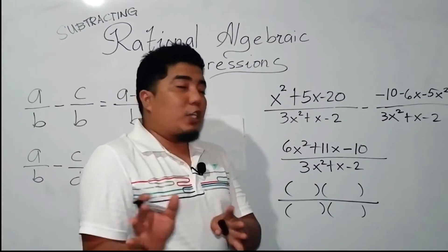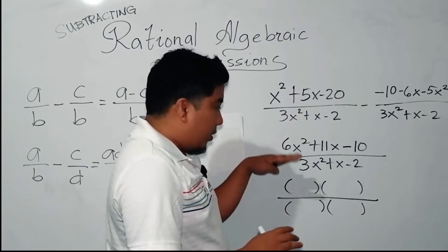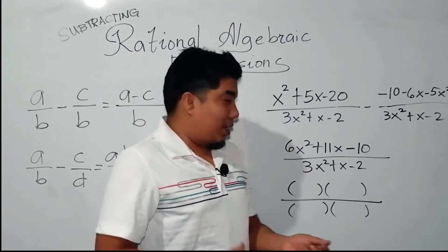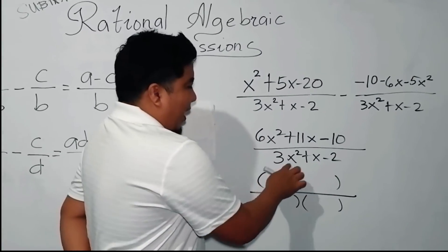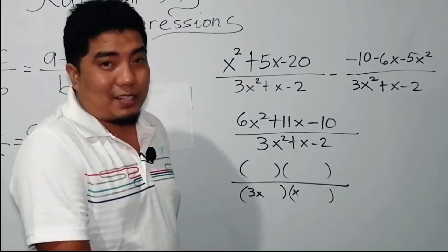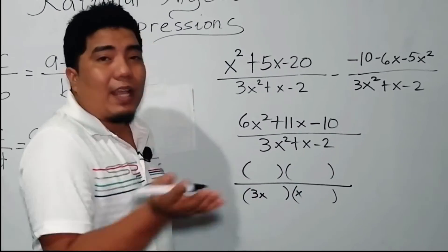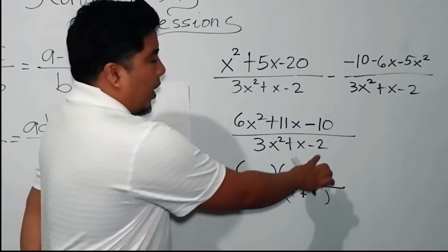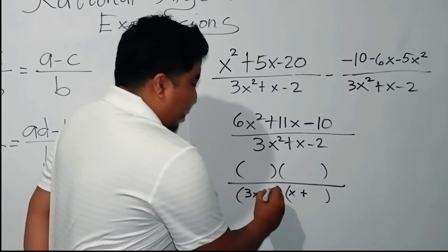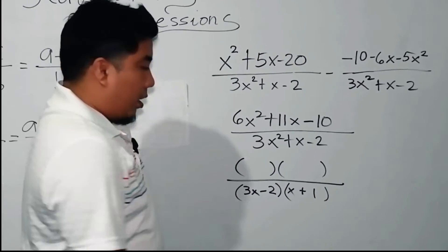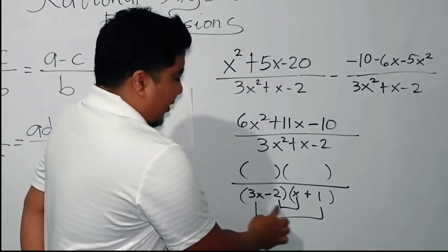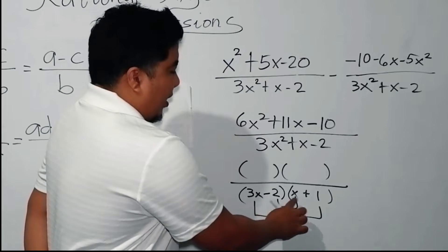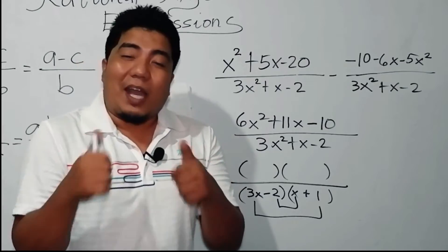Let's try to factor this. You can start with the numerator and then the denominator, or you can also start from the denominator. I will start with the denominator because it is quite easy. We have 3x squared — factors are 3x and x. And then we have negative 2, so the signs are minus and plus. The factors of 2 are 2 and 1. If we multiply 3x by negative 2, that is negative 2x, and 3x and negative 2x will give us positive x. We have the correct factors.